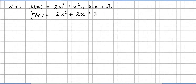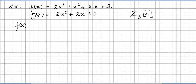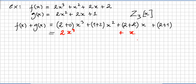Let's do an example. Take f(x) = 2x^3 + x^2 + 2x + 2 and g(x) = 2x^2 + 2x + 1, both in the ring Z_3[x]. What is f(x) + g(x)? You can pause the video and try it yourself.